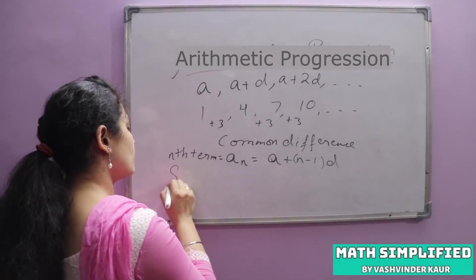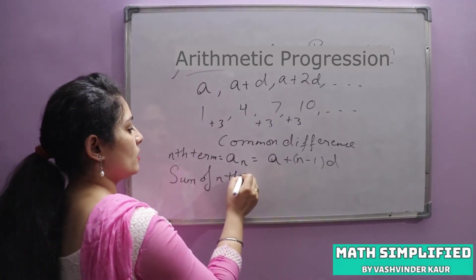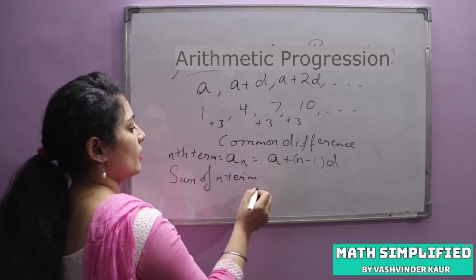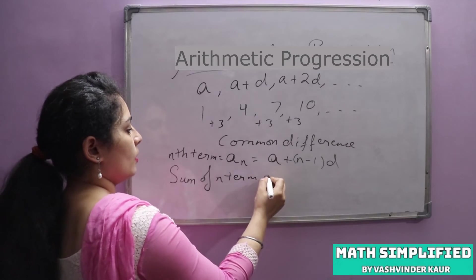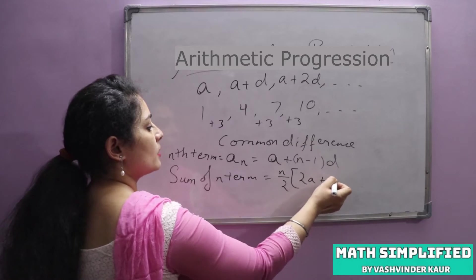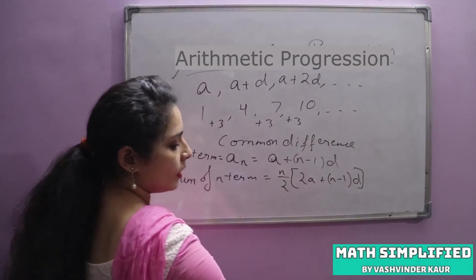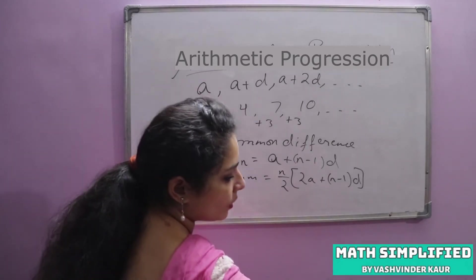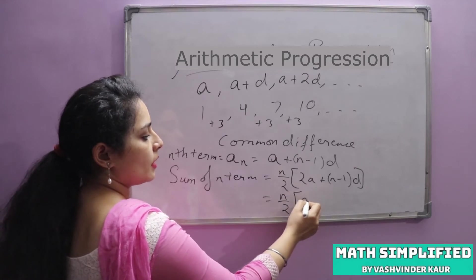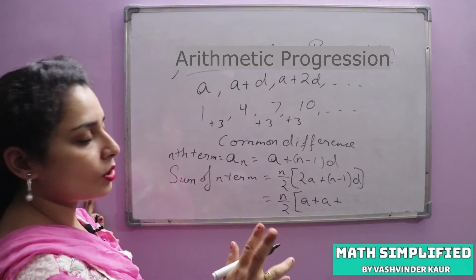And the other formula which we use here is sum of n terms. So you can just learn 2 formulas. This is Sn equals n by 2, 2a plus n minus 1d. This is a core form. We have to say n by 2, 2a plus a.